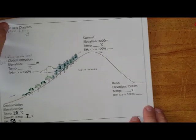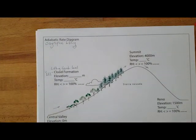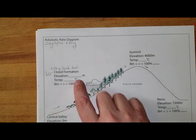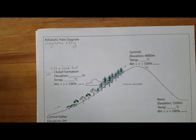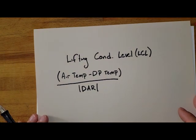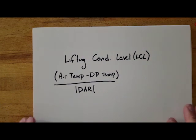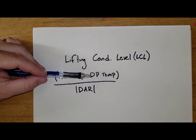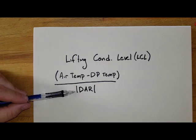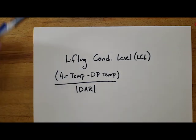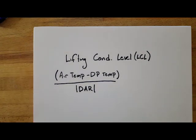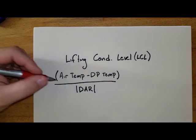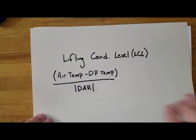So let's start playing around a little bit with this. There is an equation to help us figure out the elevation there. And that equation says that my lifting condensation level is equal to my air temperature minus my dew point temperature all over the absolute value of DAR. So dry adiabatic rate. That one we know. Air temperature and dew point temperature. Let's see what we got.